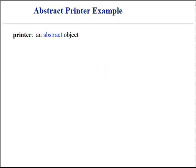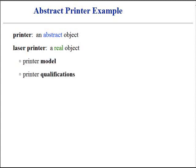For example, the printer is an abstract object. We assume that the printer can print. However, a particular model of a laser printer is no longer abstract. Such printer represents certain qualifications specific to the model. In fact, the laser printer is real, or concrete object.